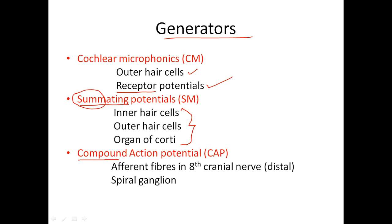Whereas compound action potential is at the level of the synapse — that is in the nerve. When the nerve gets fired, this potential is generated. It is the compound action potential from the eighth nerve and spiral ganglion. These are the generators.